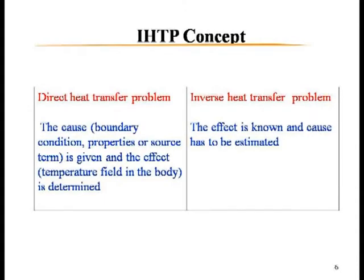Now let me explain the inverse heat transfer problem concept. First, let me explain the direct heat transfer problem. In a direct heat transfer problem, we know the boundary conditions — the flux value at the boundary, the temperature value at the boundary, and the property of the material — and with these parameters we are able to determine the temperature profile inside the domain. In the inverse heat transfer problem, the boundary conditions are unknown and are estimated with the help of temperature data taken by sensors mounted inside the domain. In the direct problem, the cause (boundary condition, heat flux, temperature) is known and we determine the effect (temperature field); in the inverse problem, the effect is known and we determine the cause.